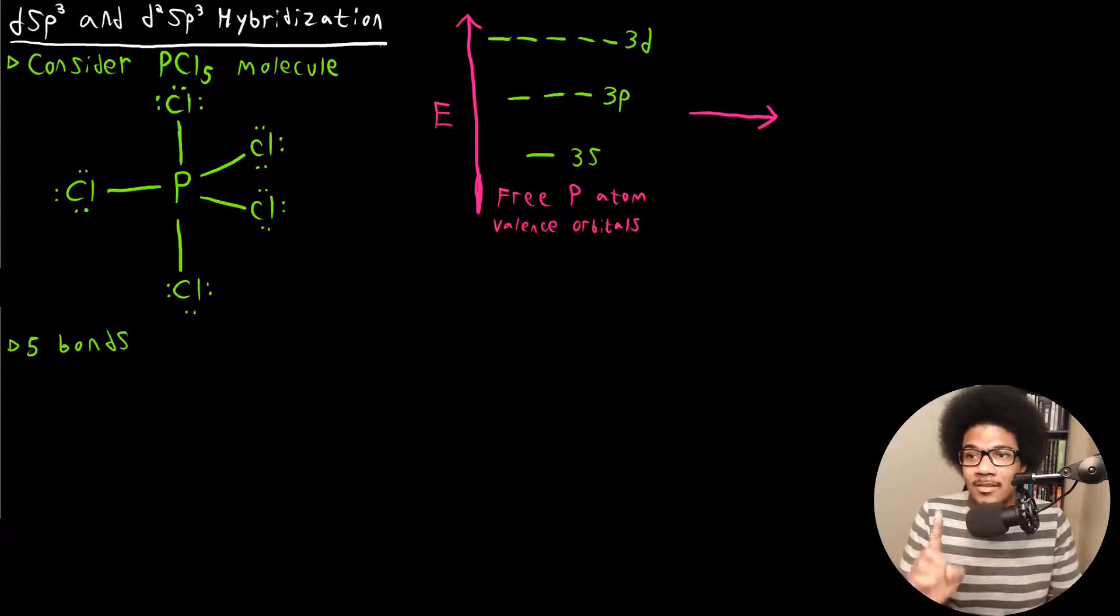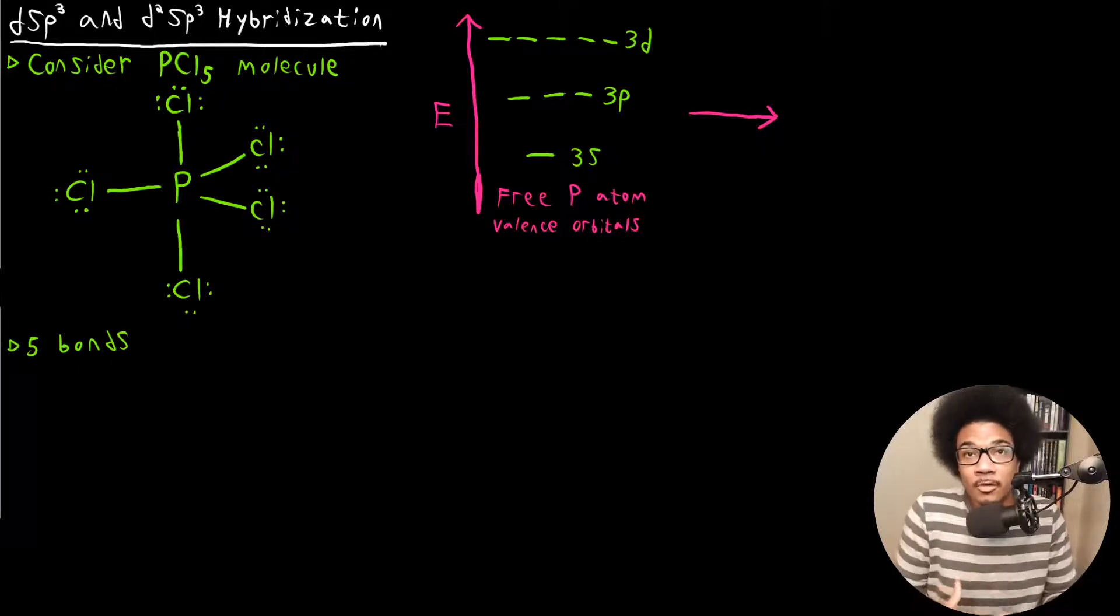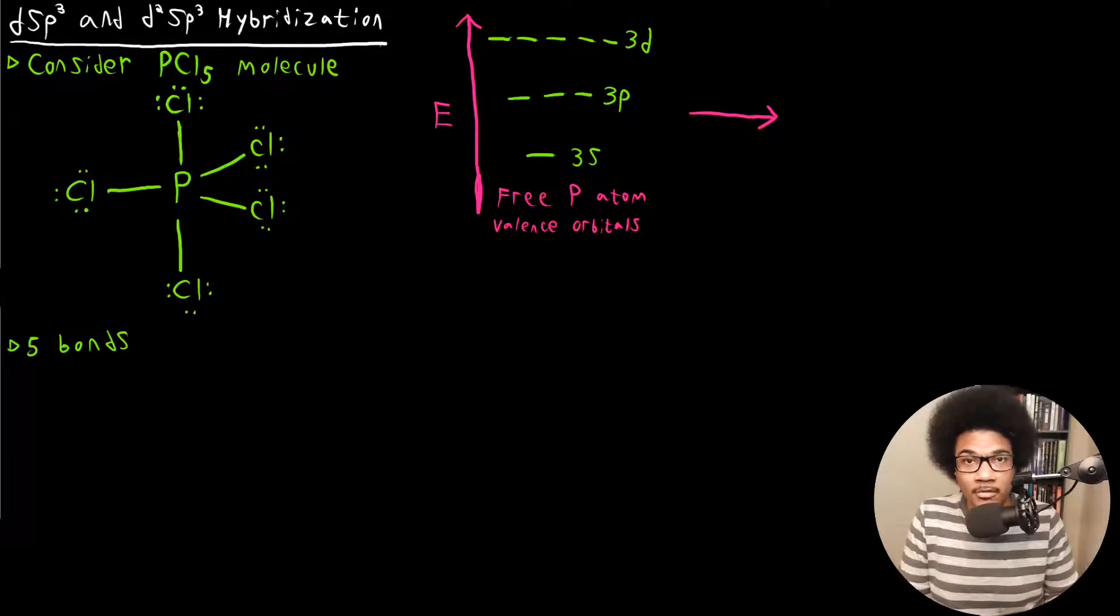So let's consider the PCl5 molecule. PCl5 has this shape. I kind of didn't draw its VSEPR representation, but this is a trigonal planar structure in the middle bisected by this linear piece up top. It's a trigonal bipyramidal geometry. We need five bonds that form a trigonal bipyramidal geometry.